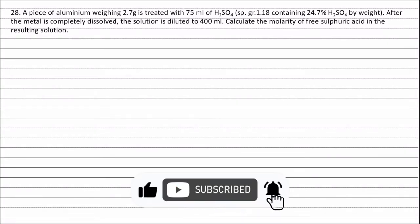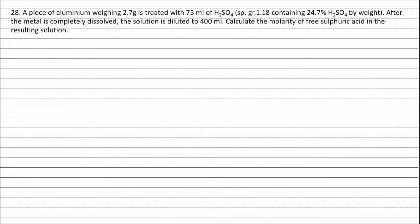Question 28. A piece of aluminium weighing 2.7 grams is treated with 75 ml of H₂SO₄ with specific gravity 1.18 containing 24.7% H₂SO₄ by weight. After the metal is completely dissolved, the solution is diluted to 400 ml. Calculate the molarity of free sulphuric acid in the resulting solution.